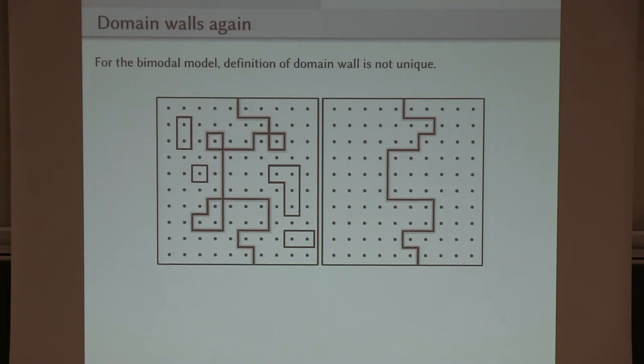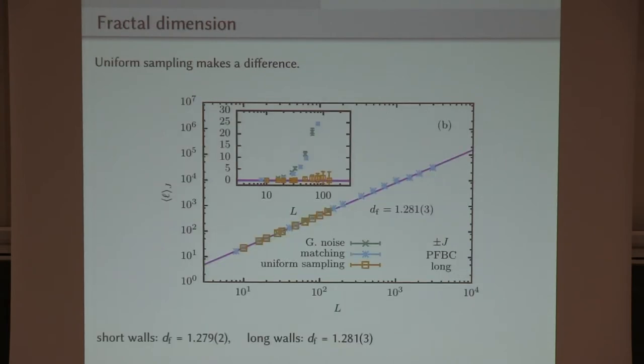Now, while for the Gaussian case, the domain wall is easy, straightforward to identify because it's unique, here for the bimodal case, you can have excitations which are detached from the domain wall because you can overturn certain clusters at zero energy cost. And then also, you can have such bubbles attached to the domain wall. So there are different definitions of the domain wall for the bimodal case. And so we carry through two extreme cases.